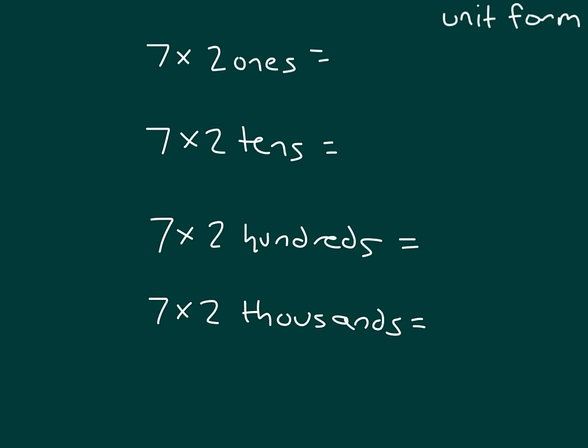Will the answer change as we go from each of those problems? 7 times 2 is 14, so 7 times 2 ones is 14 ones. Let's see what happens when we go 7 times 2 tens. 7 times 2 ones is 14 ones. We still have 14, but in this case, we have 14 what? Tens.